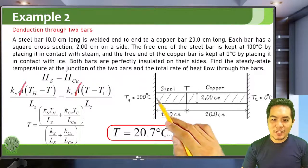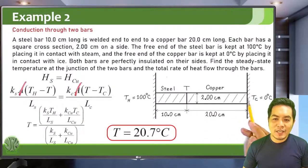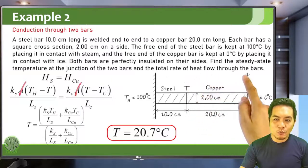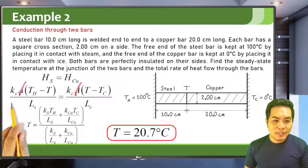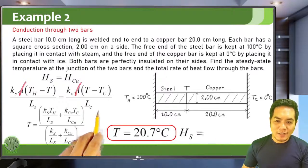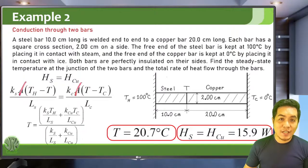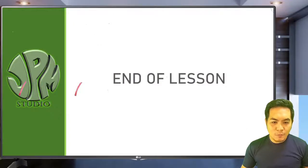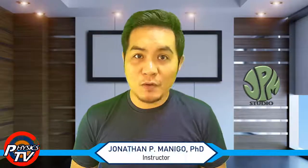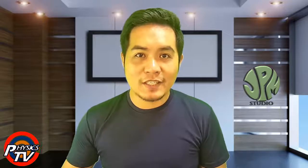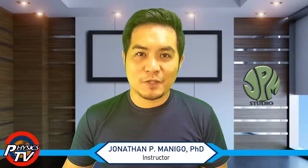To find the total rate of heat flow, substitute the known values into either the steel or copper heat current formula — both give the same answer of 15.9 watts. That concludes the topic of heat current. I hope you've learned something about this chapter on temperature and heat, and I will see you again in the next unit. Goodbye.